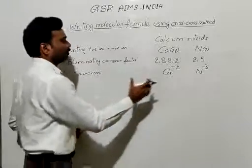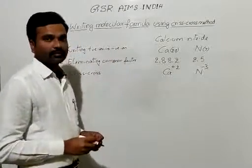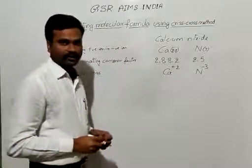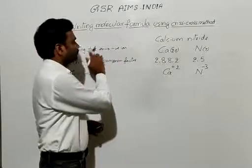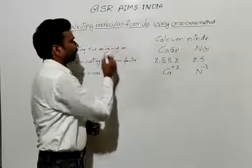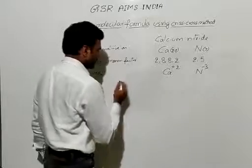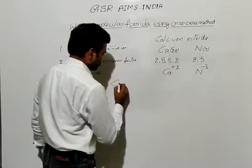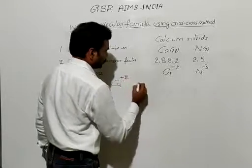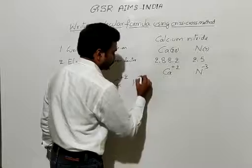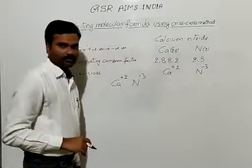Now let us apply these three steps for writing the molecular formula of calcium nitrate. Step one: writing the positive ion followed by the negative ion. Here, the positive ion is Ca²⁺, followed by N³⁻.